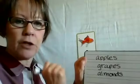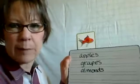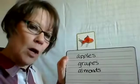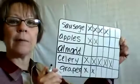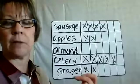So here's my graph - it's an easy way to keep track of things. Sausage: four, apples: two, no almonds, celery: five, grapes: two. I can tell right now I have the most celery because this row is the longest. What do I have the least of? Almonds doesn't have any, then grapes and apples are tied. So on my grocery list I would write apples, grapes, and almonds. That's a quick example of a graph.